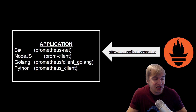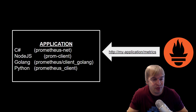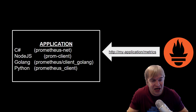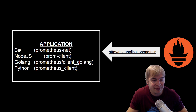Just before we begin — in order for Prometheus to monitor your application, you're going to need a metrics endpoint. On the left-hand side we have our application, and I'm going to show you how to integrate a client library into your app so you can create that metrics endpoint. Then on the right-hand side, we'll create a Prometheus container that will come and scrape our endpoint and monitor our application.